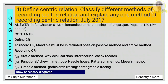Then write about the methods to record CR. Three main methods: static method, functional or chewing method, and graphic method. Under static comes wax occlusal rims and interocclusal check records. Under functional comes Needlehouse, Patterson, and Mayor's method. Under graphic method: gothic arch tracing and pantographic tracing. For gothic arch tracing write the concept, who gave it, components, advantages, disadvantages, and contraindications. For pantographic tracing, write what a pantograph is and add necessary diagrams.